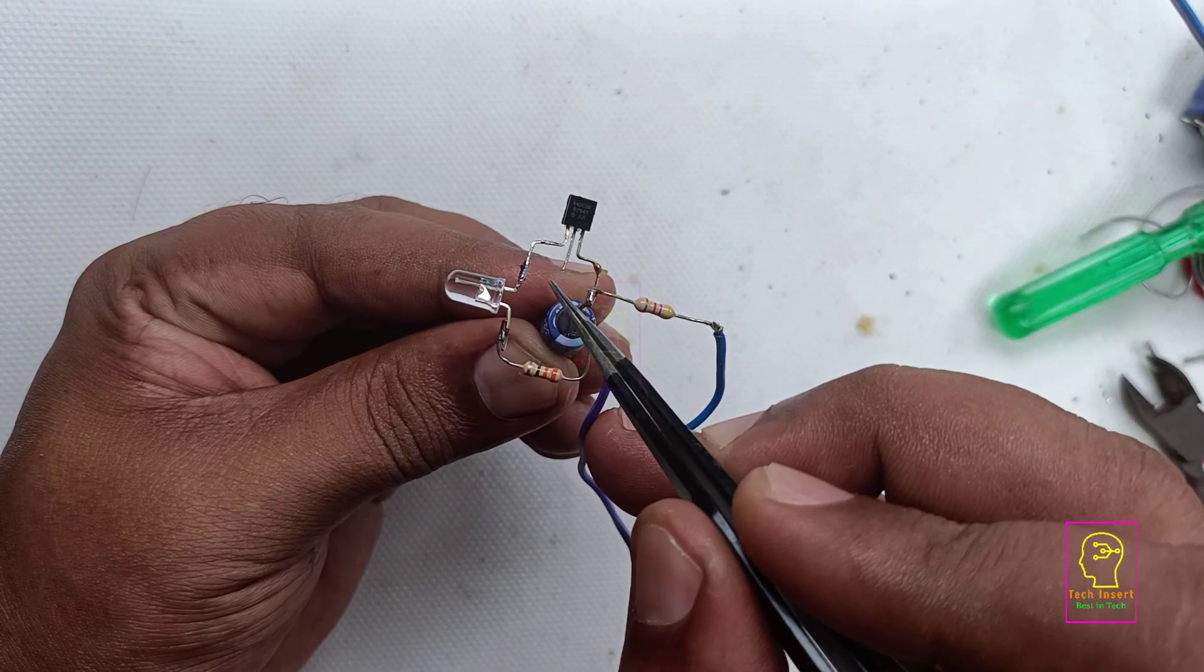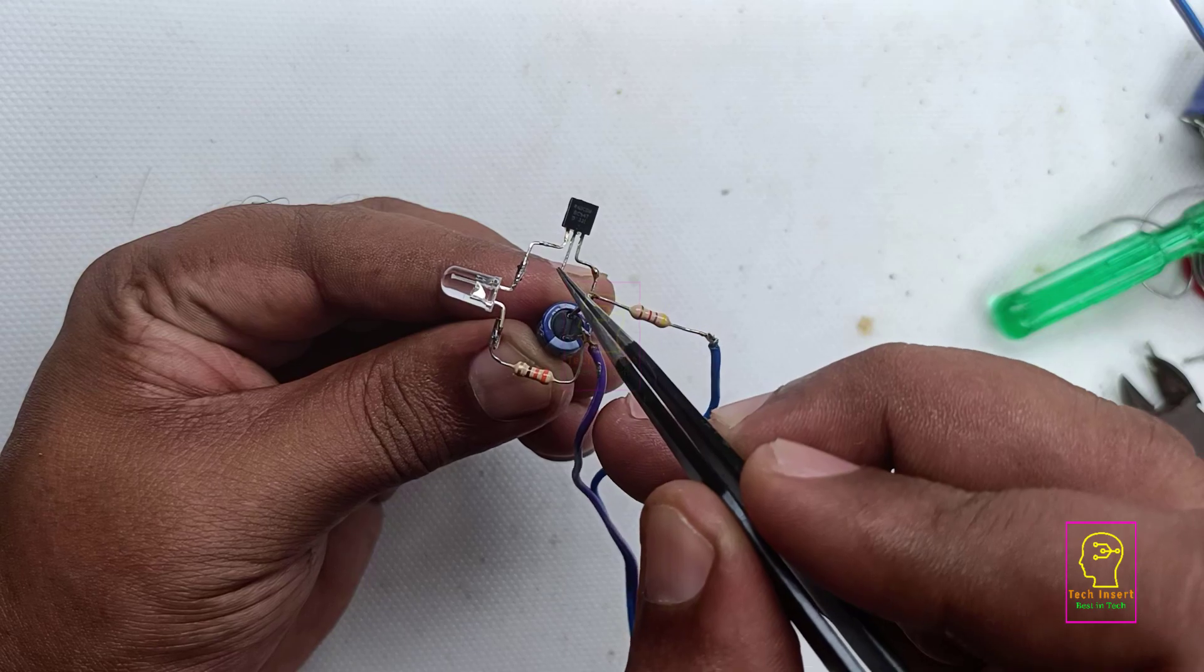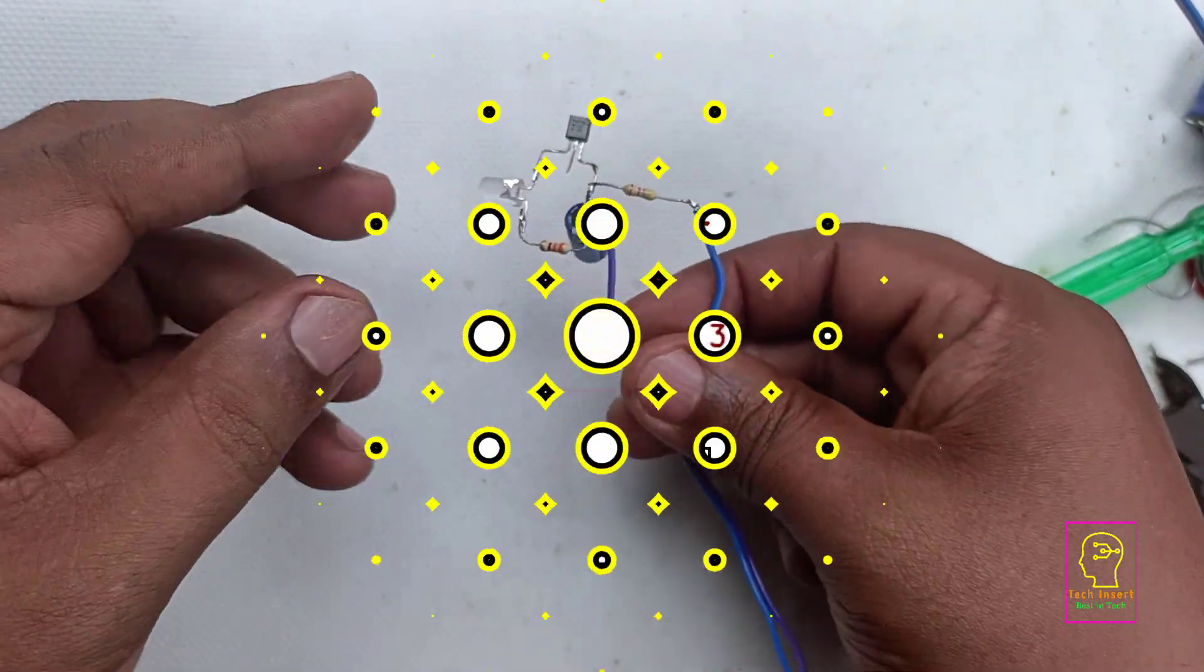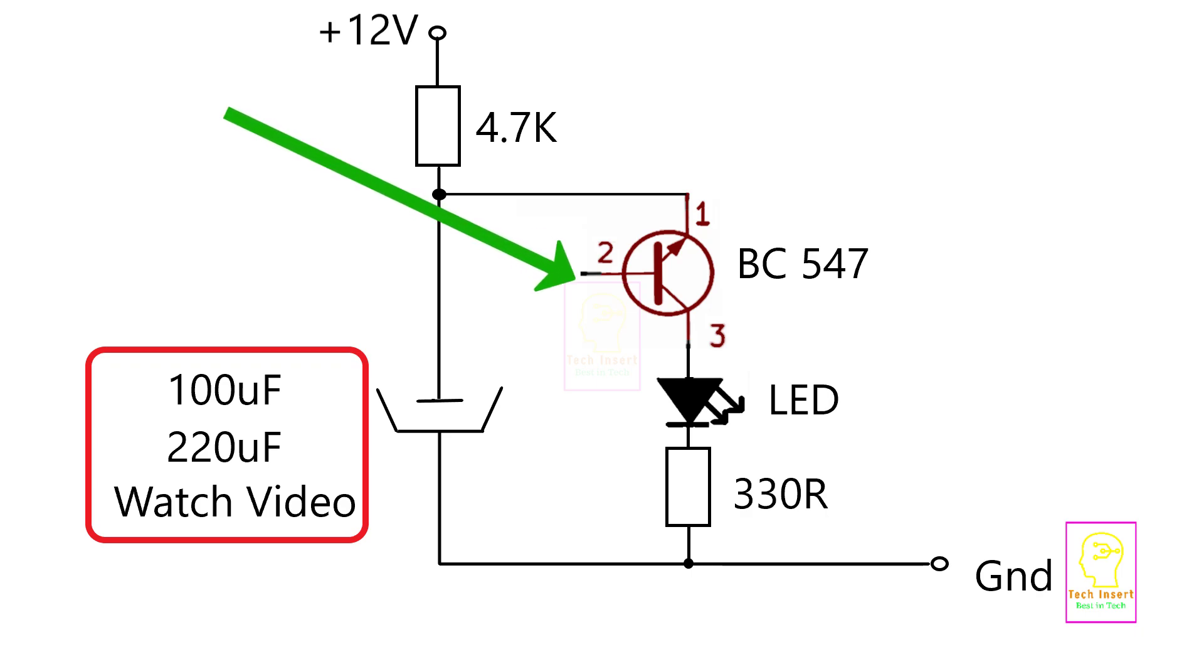Please note that the base of the transistor does not have any connection. Input voltage also has dependency with the working of this circuit. This is the complete schematic and the base of the transistor is left unconnected.